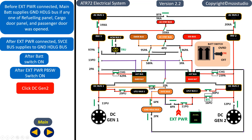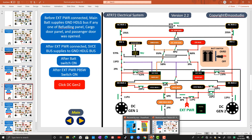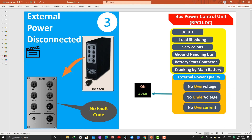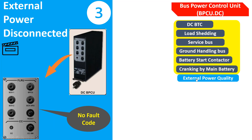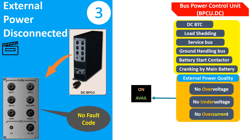You can see that standby 1 now supplies to DC bus 1 and DC bus 2. If the standby 1 condition is acceptable — no over-voltage, no under-voltage, no over-current — then external power is okay. This is the normal electrical system distribution. The main function of the Bus Power Control Unit is external power quality check: no under-voltage, no over-voltage, no over-current.